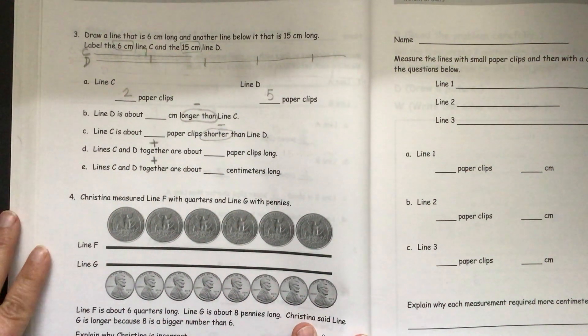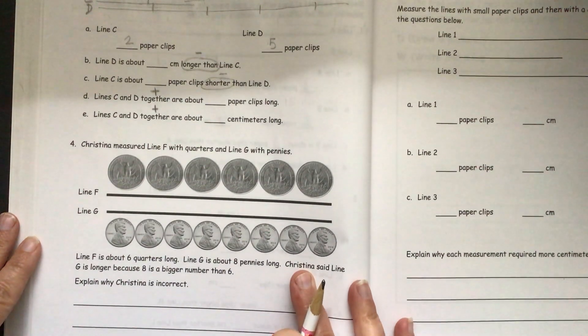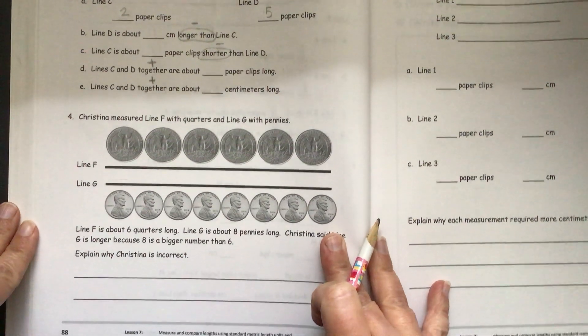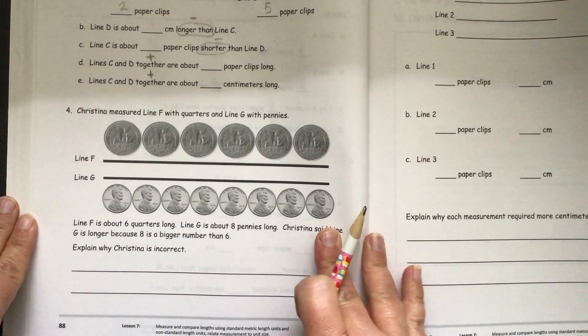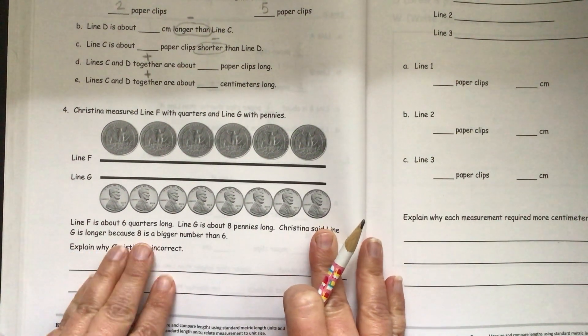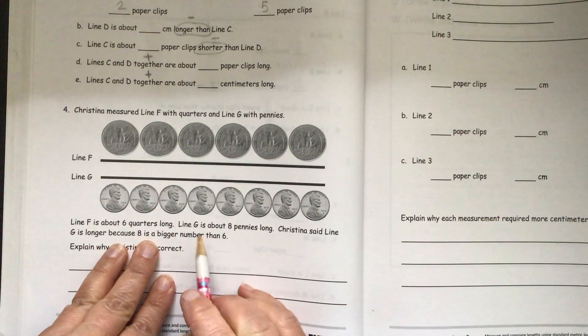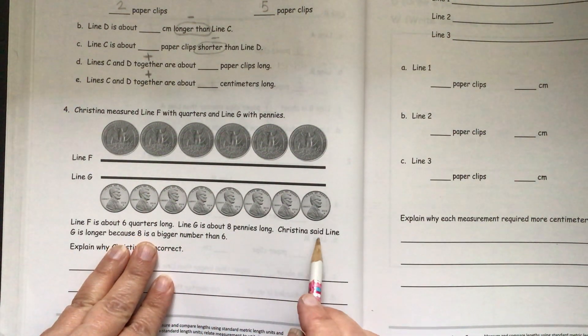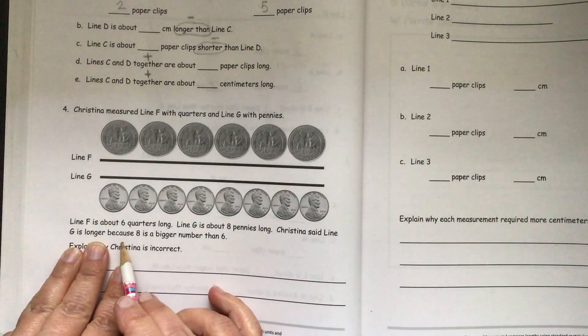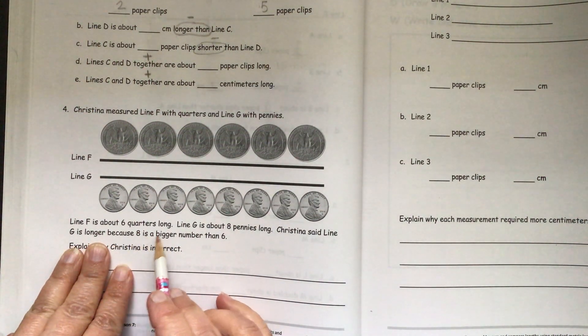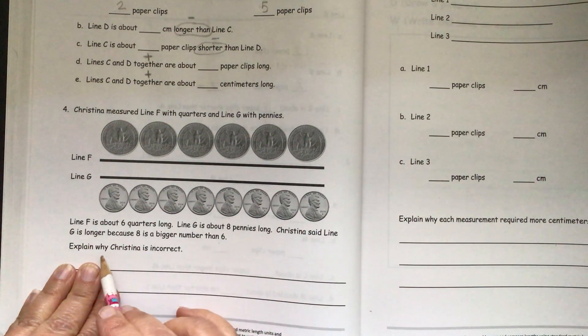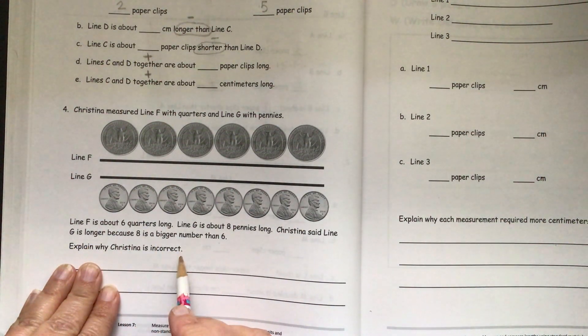Then number four: Christina measured line F with quarters and line G with pennies. Line F is about six quarters long. Line G is about eight pennies long. Christina said line G is longer because eight is a bigger number than six. Explain why Christina is incorrect.